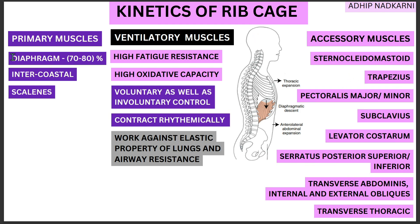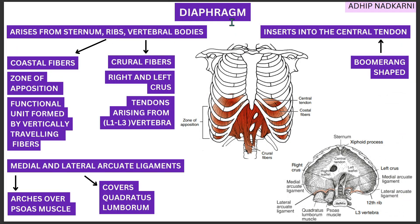We will talk about each muscle in future videos, but this video focuses only on the diaphragm, as it accounts for 70 to 80 percent of the breathing effort. Coming to the diaphragm, let's first look at its origin and insertion. It arises from the sternum, from the ribs on the sides, and from the vertebral bodies, and it attaches centrally to the central tendon.